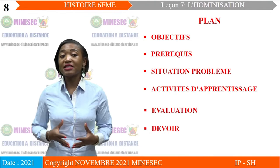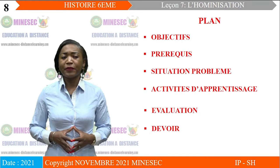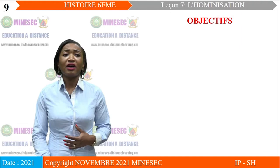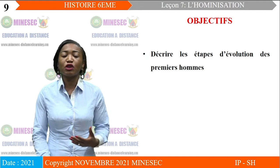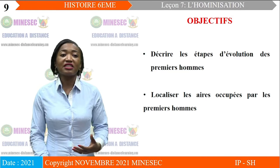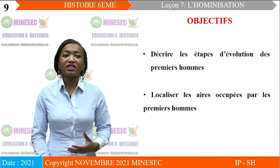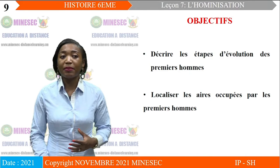En ce qui concerne les objectifs, cette leçon 7 a pour objectif de permettre à l'apprenant de décrire les étapes d'évolution des premiers hommes. Second objectif : localiser les aires occupées par les premiers hommes. À la fin de cette unité d'apprentissage, l'apprenant devra être capable de décrire les étapes d'évolution des premiers hommes et de localiser les aires occupées par les premiers hommes.